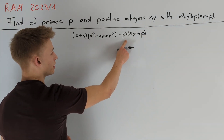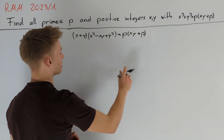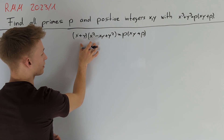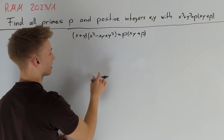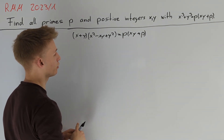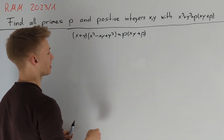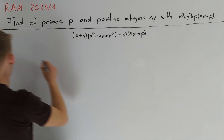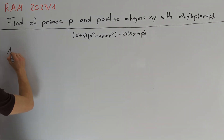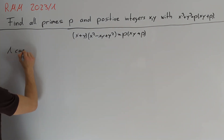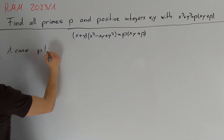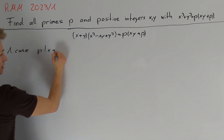Since p is a prime number, p must divide one of the two factors on the left-hand side, so we consider both cases. Let's start with the first case that p divides x + y.